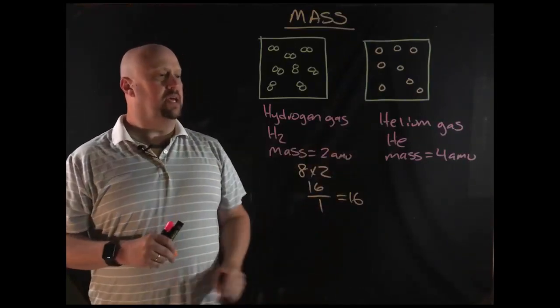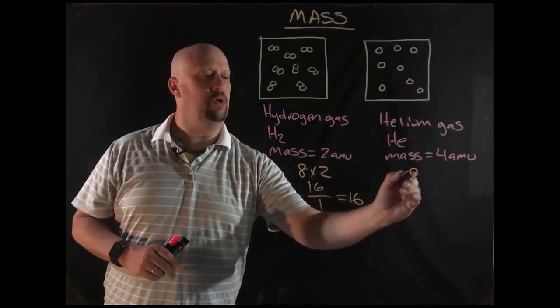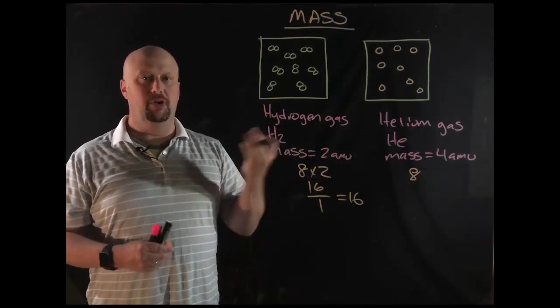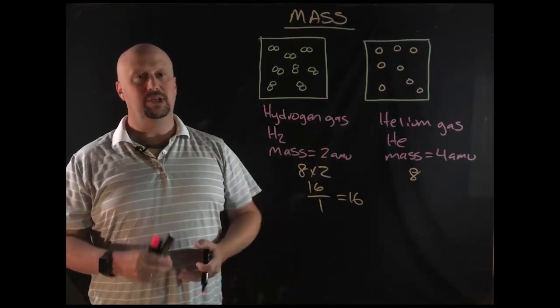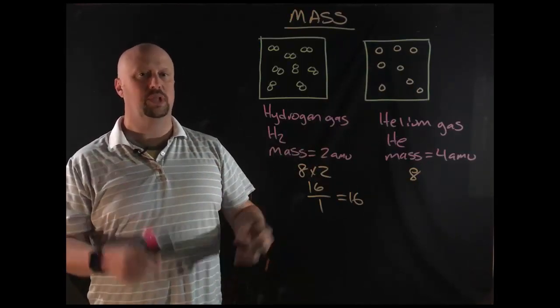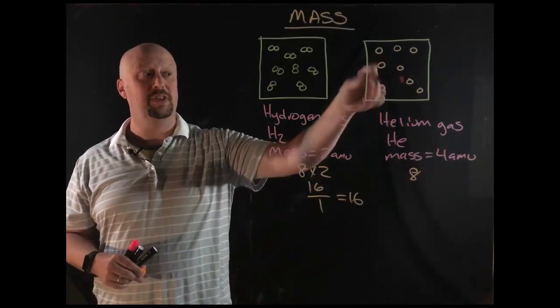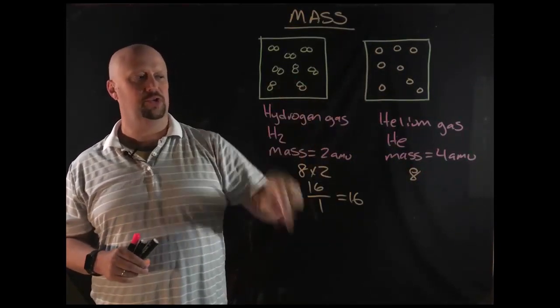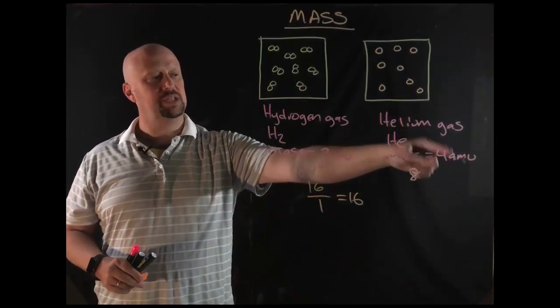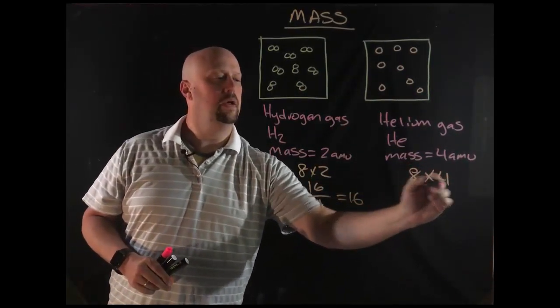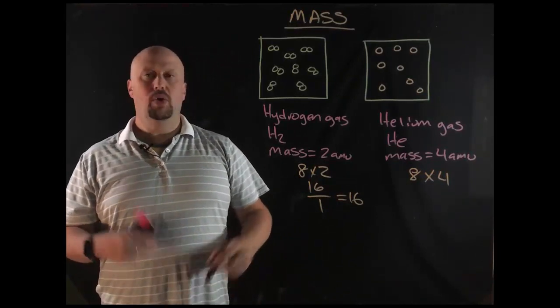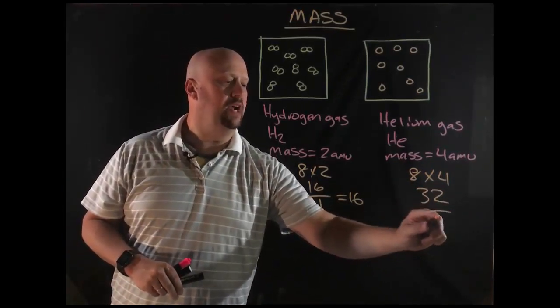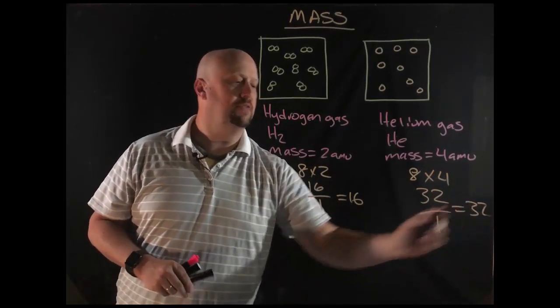So for helium, same thing is true. I've got eight particles in here. But helium is a heavier atom than hydrogen. Now, hydrogen is basically a proton and electron. Helium is two protons, two neutrons, two electrons. Its mass is going to be four, even though there's only one helium in each one of these particles, whereas there are two hydrogens. So the mass of each of these particles is four. And so if we put those together, that would give us 32. We divided that by the same one. That would give me a density of 32.